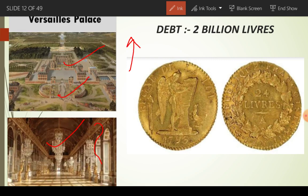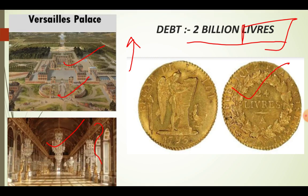Jab France ka raja Louis XVI bana, us samay France par two billion livre ka debt tha. Livre ek currency hoti hai — jaisi hamaari currency rupees hai, waise hi France ki currency livre hai. Ab is khali khajane ko kaise bharein? Then Louis XVI planned something. Usne ek hi tareeqa socha: woh tha tax ko increase karne ka.